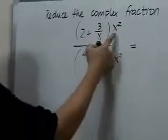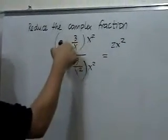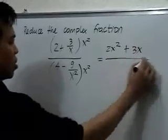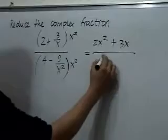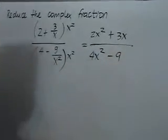So, x squared times 2 is 2x squared, and x squared times 3 over x is positive 3x, over x squared times 4 is 4x squared, and x squared times negative 9 over x squared is negative 9.